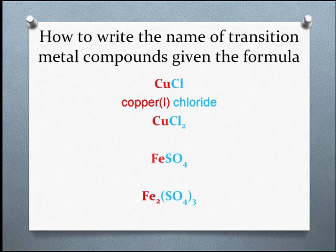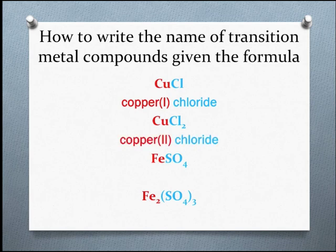Using similar logic, we can figure out which copper ion is present in CuCl₂. Two negative 1 ions are needed to balance out the one positive 2 ion. So the copper ion must be copper(II). So this compound is copper(II) chloride.